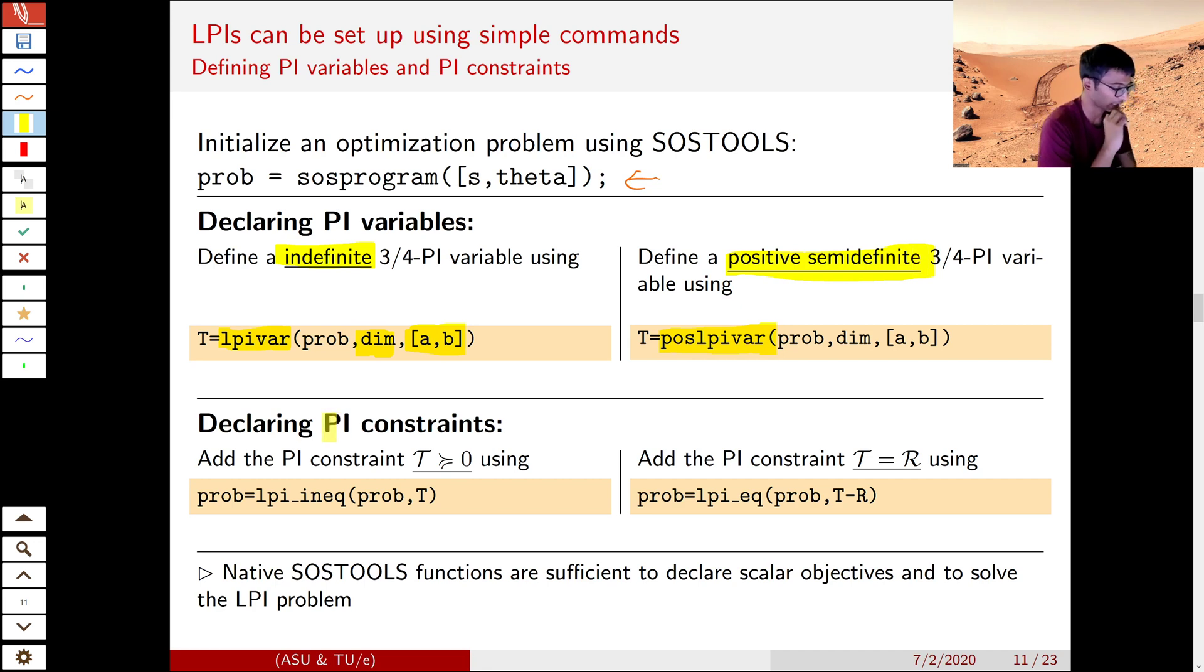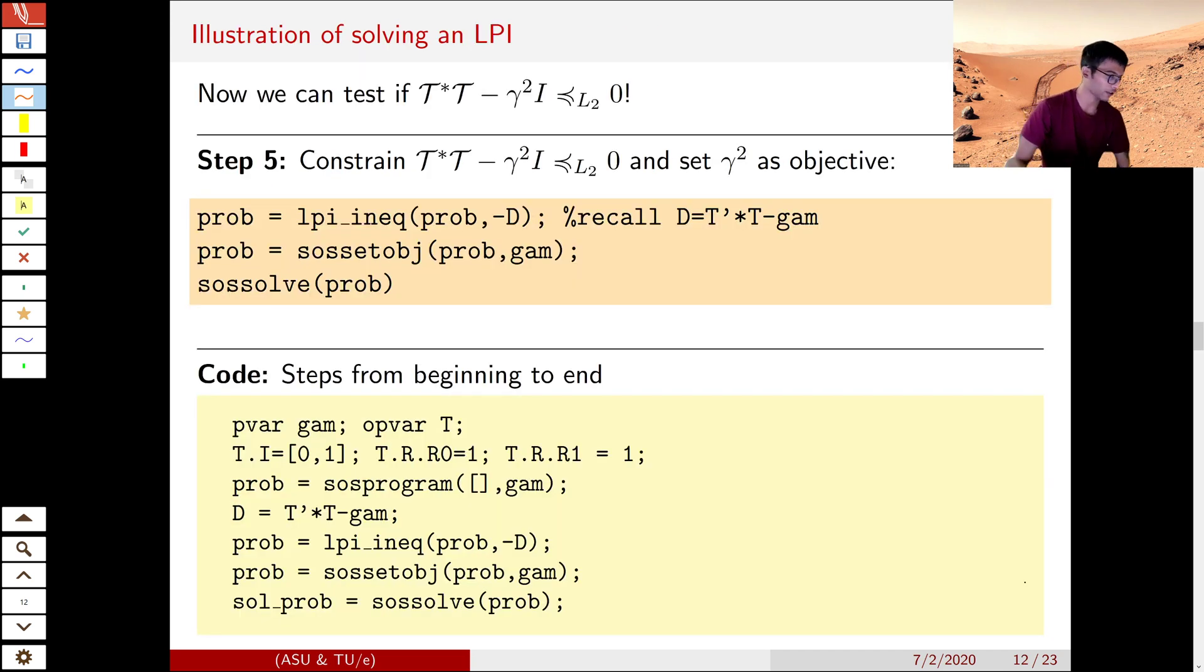Declaring PI constraints is just as simple. You use lpi_ineq to declare inequality constraints, lpi_eq to declare equality constraints. Scalar objectives and solving the optimization problem can be done by calling native SOSTOOLS functions.